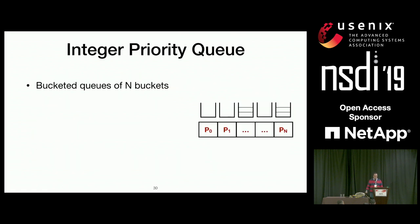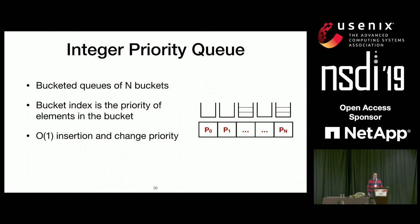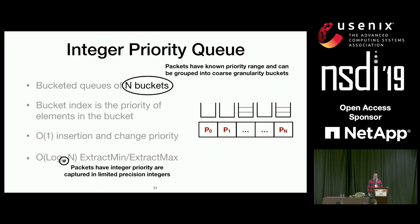Integer priority queues are a bucketed structure of n buckets, indexed based on the priority. This makes insertion overhead O(1), since you simply look up the bucket by its index. They support O(log_W n) for extract-min or extract-max — a bound that can be very efficiently implemented in software. Importantly, the overhead is determined by n — the range or number of priorities — which is a function of the scheduling policy, not a function of load. For a specific scheduling policy, the overhead is fixed regardless of load.